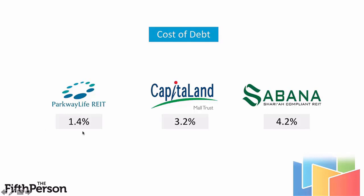Sabana is an industrial REIT where industrial rental prices can go up and down, making it viewed as relatively riskier compared to malls and healthcare assets — that's why the cost of debt is generally higher. There's no fixed rule of thumb for cost of debt because it depends on the interest rate environment. As of 2018, interest rates in Singapore are relatively low, so cost of debt is around 3% to 4%, with good REITs like Parkway Life at about 1.5% to 2%. The cost of debt gives you a good indication of whether a REIT's profile is volatile or not.